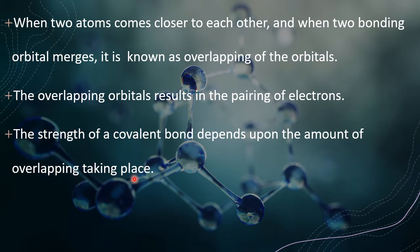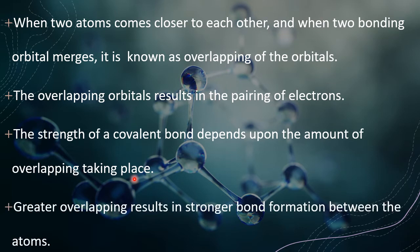The overlapping orbitals result in the sharing of electrons, which results in the formation of a covalent bond. The strength of a covalent bond depends upon the amount of overlapping taking place. Effective overlap brings a very good covalent bond. Simply overlapping just on the border area is of no use. How one orbital covers perfectly on the other, how effectively and how closely — that gives strength to the bond. Greater overlapping results in stronger bond formation between the atoms.